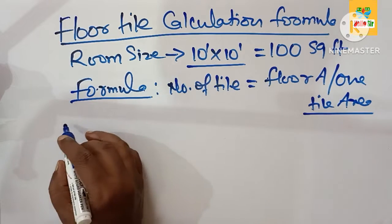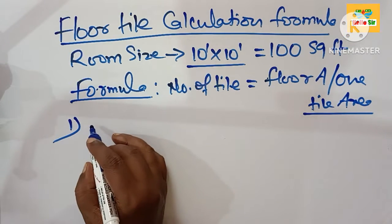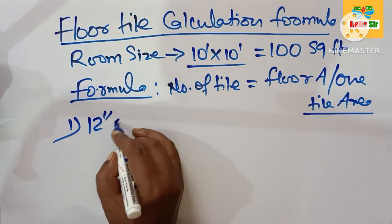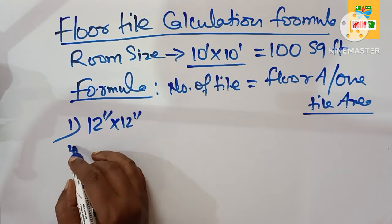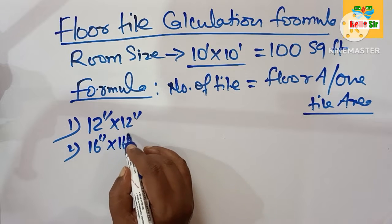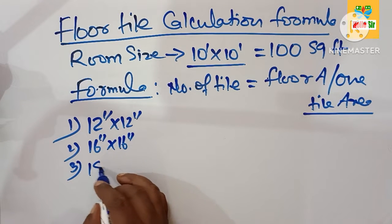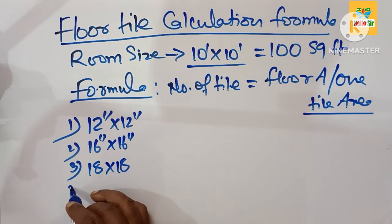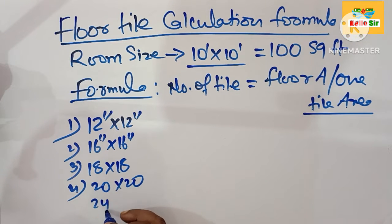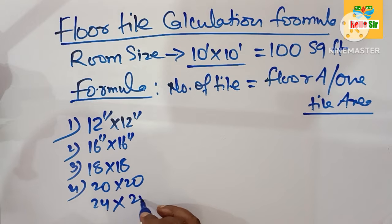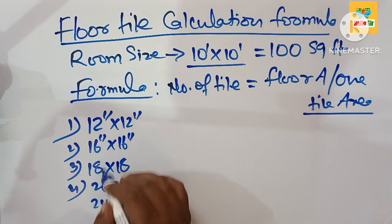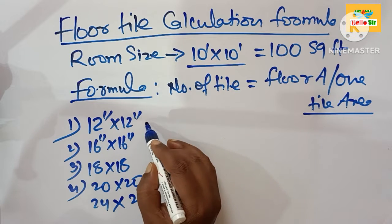You should know that there are different sizes of tiles — you have many options: 12 inches by 12 inches, 16 inches by 16 inches, 18 by 18 inches, 20 by 20 inches, and 24 by 24 inches. You can choose according to your requirement.